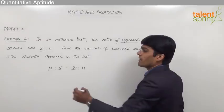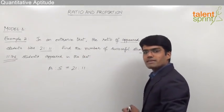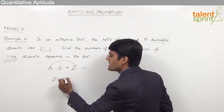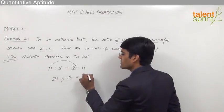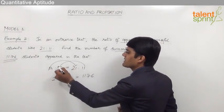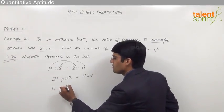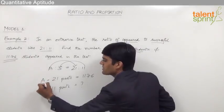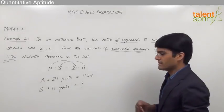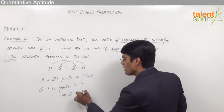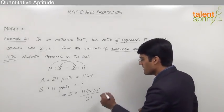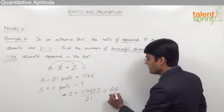The total number of students who appeared is 1176, which equals 21 parts. We need to find the number of successful students, that is 11 parts. By cross multiplying, the number of successful students equals 1176 × 11 ÷ 21, which gives us 616. So the total number of successful students is 616.